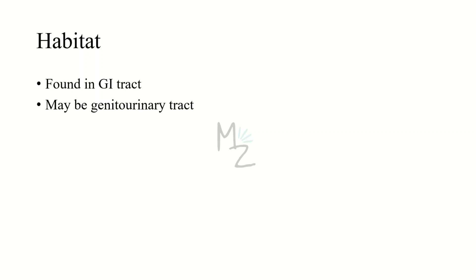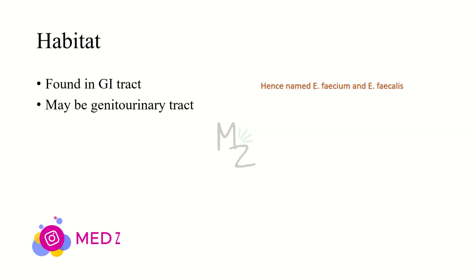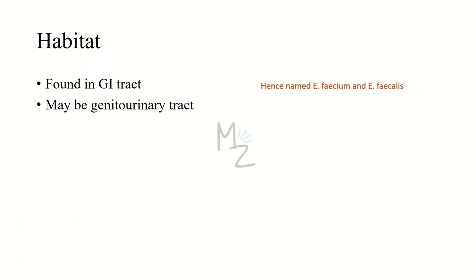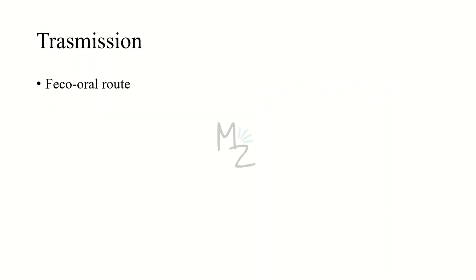This bacterium is found in the GI tract, hence named enterococcus faecium and enterococcus faecalis. It can also be found in the genitourinary tract, but its primary location is the GI tract.